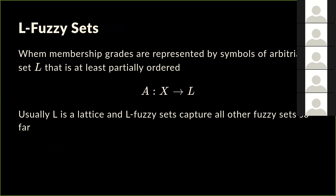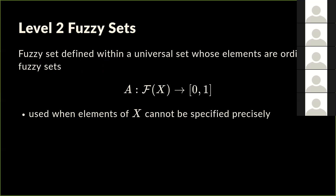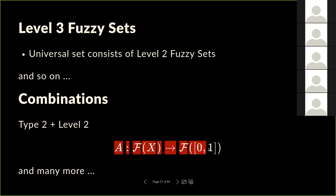Another type is L-fuzzy sets, where instead of mapping elements to numbers or intervals, you map all elements of X to any set L that is at least partially ordered. So the membership grade of 2.5 in the set 'close to two' could be any element of a partially ordered set — like apples or oranges — as long as order is defined. You can also make the universe itself fuzzy, or combine fuzzy universe with fuzzy membership grades.